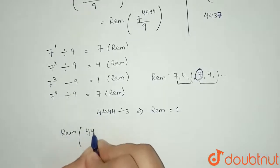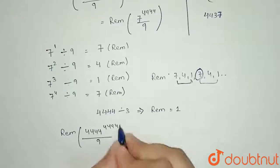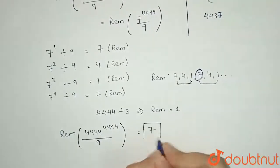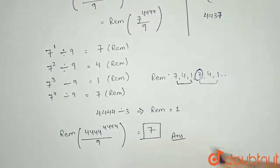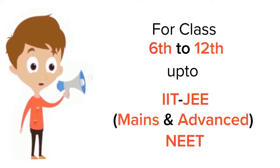when 4444 to the power 4444 is divided by 9, that will be equal to 7. Hence, 7 will be our final answer. Thank you. For class 6 to 12, IIT-JEE and NEET level, trusted by more than 5 crore students, download Doubtnet today.